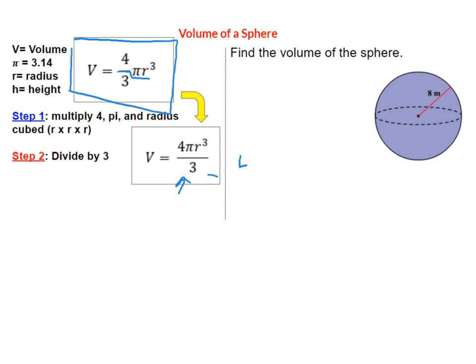So step one I'm going to multiply four times pi times radius cubed. The radius in this one is eight. Remember radius goes halfway across the circle. You can still solve this question if you're given diameter. You just need to make sure you convert diameter to radius.